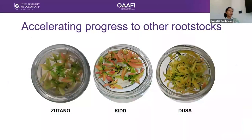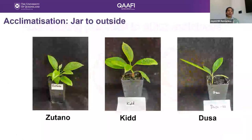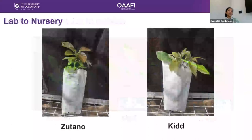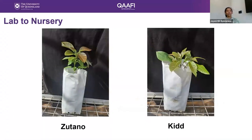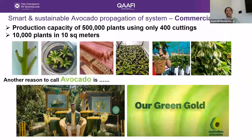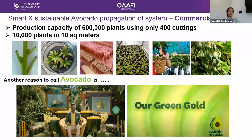We then accelerated this work to other rootstocks — Zutano, Keed, and Dusa — and were able to develop very nice systems for these three rootstocks as well. Acclimatized plants are now being transferred to the nursery for nursery trials. At the end of all this, we have actually developed a smart and sustainable avocado propagation system, now commercialized with Anderson's Horticulture. This system allows us to produce avocado plants year-round without seeds or budwood, producing disease-free plants in large quantities — another reason to call our avocados our green gold.